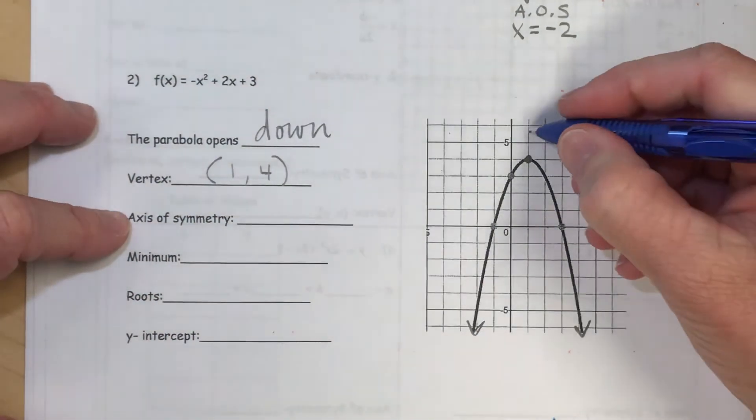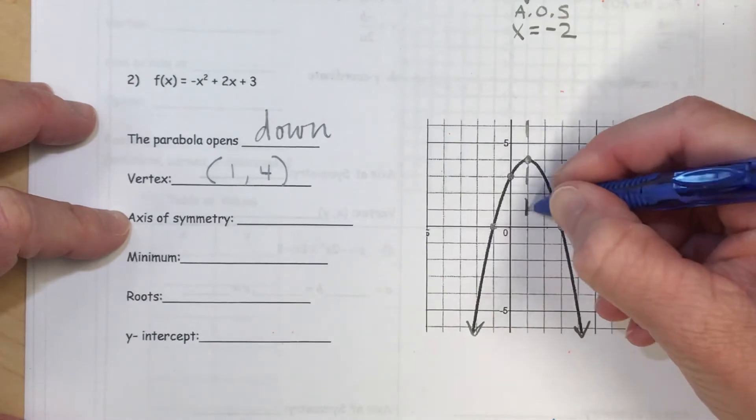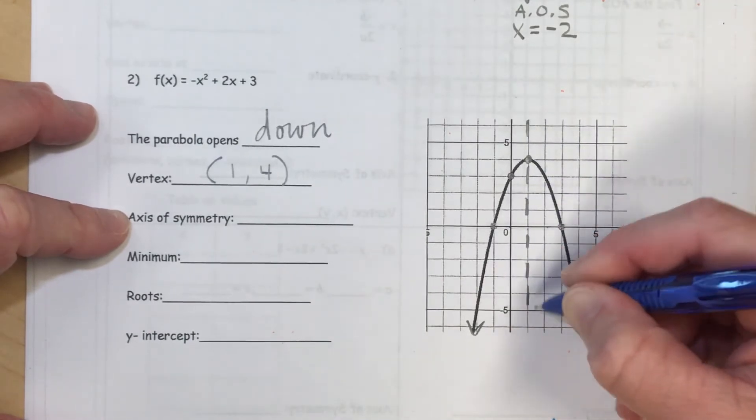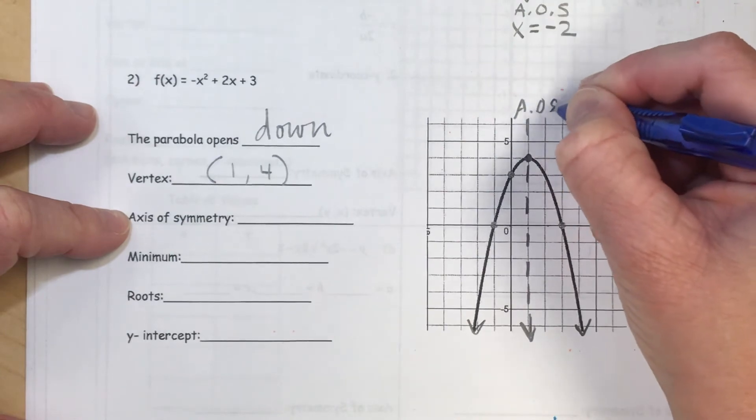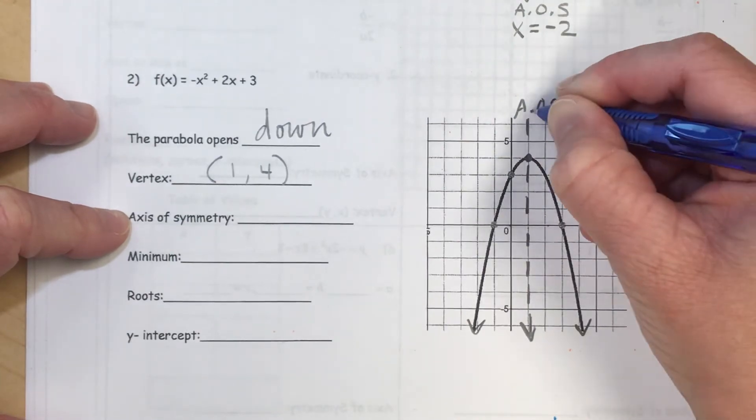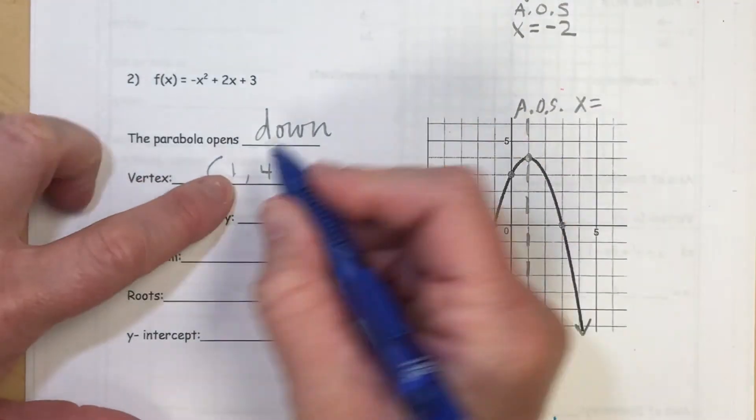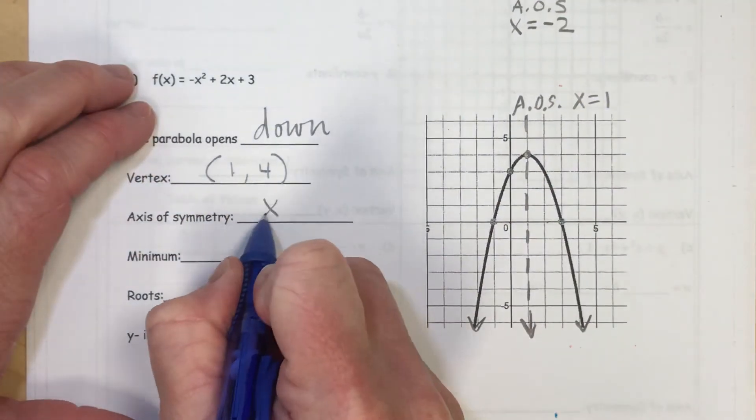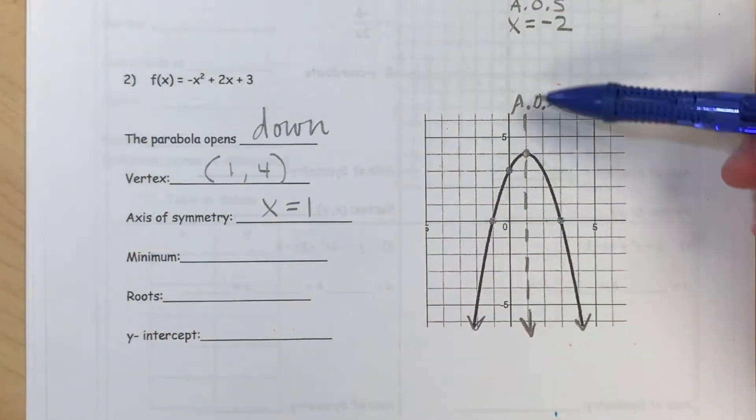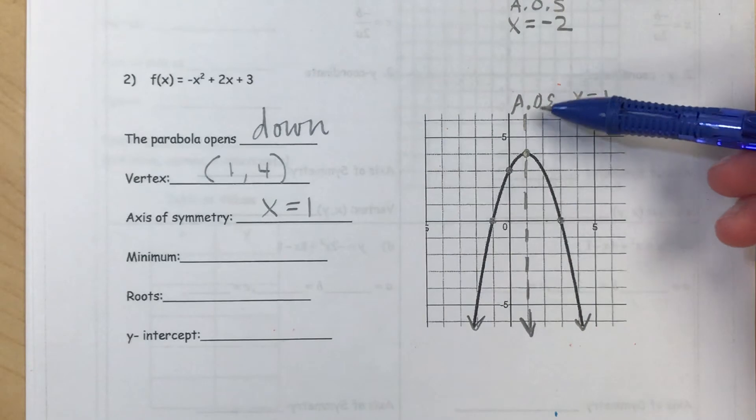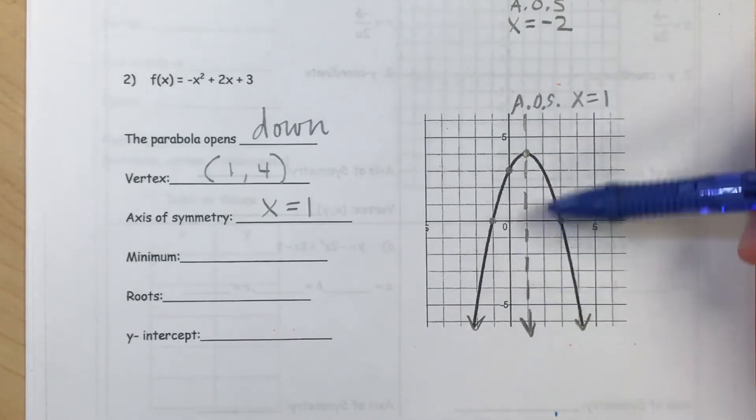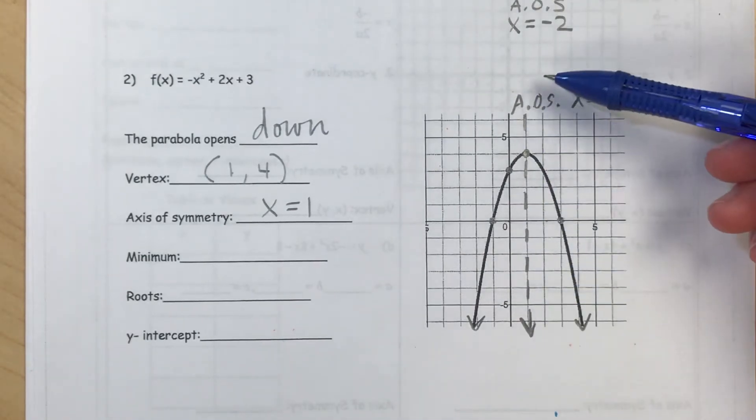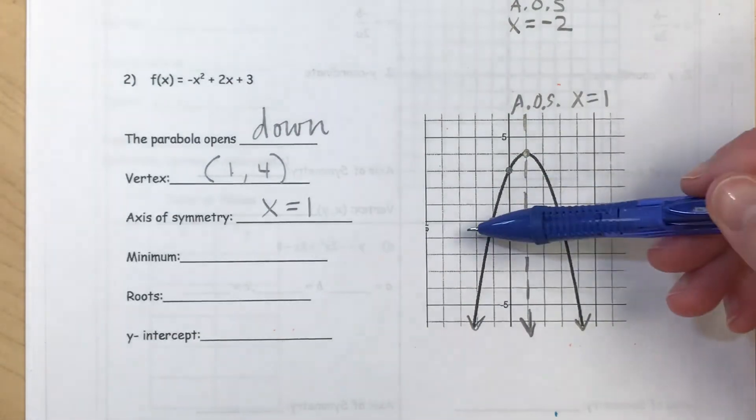Now, the axis of symmetry is a vertical line that cuts that parabola exactly in half. And that axis of symmetry should go through the same x value of your vertex, which will also be 1. Now, we don't always draw the axis of symmetry, but it's there. That's what your parabola is going to be symmetric about, so that the right side and the left side match.